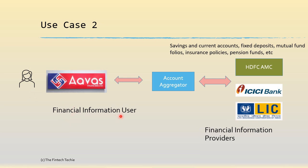The financial information user in this case is the NBFC. The providers are LIC, the bank, and HDFC. The kind of information that can be shared includes savings and current account balances, statements, fixed deposits, mutual fund folios, insurance policies, pension funds, and a lot more.